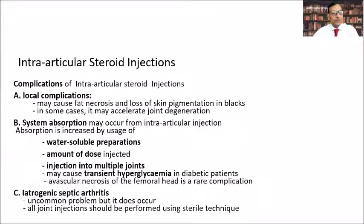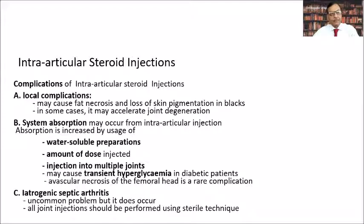Complications of intra-articular steroid injections can be local or systemic. Local complications include fat necrosis and loss of skin pigmentation. In some cases it may accelerate joint degeneration, making the joint like a Charcot joint. Systemic absorption can happen depending on the preparation and dose — if the preparation is water-soluble, absorption is more; higher doses and multiple joint injections increase systemic absorption. This can cause transient hyperglycemia in diabetic patients and rarely avascular necrosis of the femoral head.